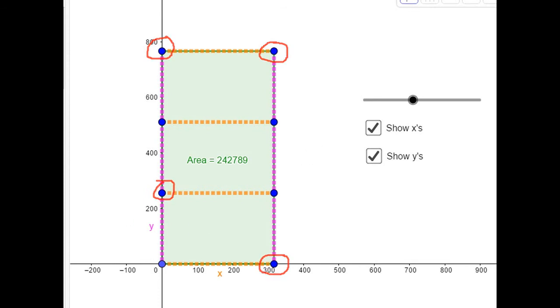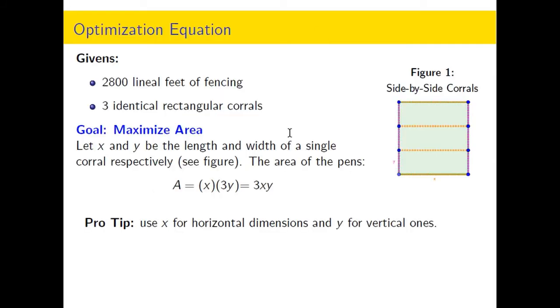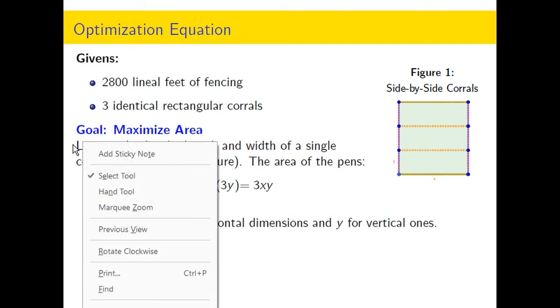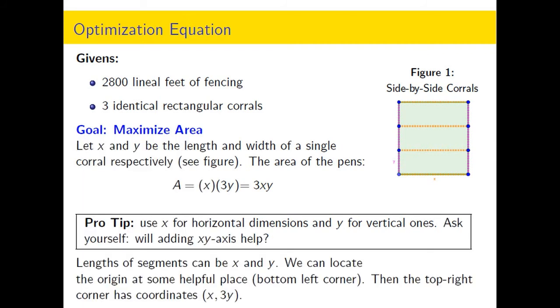Usually the bottom left hand corner means I'm working in the first quadrant where all the values are positive for both x and y. This pro tip is about definitely using the xy coordinate axis when possible.